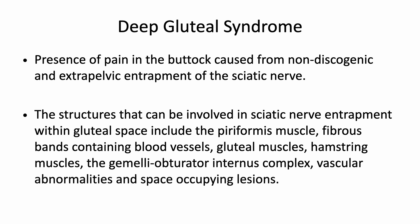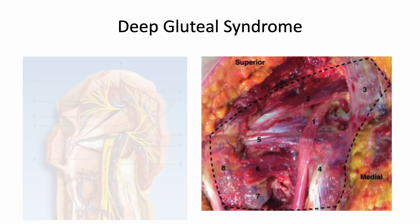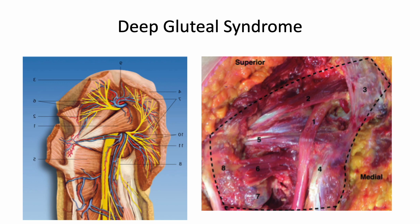Progress in understanding posterior hip anatomy and sciatic nerve kinematics has helped identify several locations where the sciatic nerve can be trapped. For that reason, the term deep gluteal syndrome — instead of piriformis syndrome — is now preferred to describe pain in the buttock caused by non-discogenic and extrapelvic entrapment of the sciatic nerve. Structures involved include the piriformis muscle, fibrous bands containing vessels, gluteal muscles, hamstring muscles, the gemelli-obturator internus complex, vascular abnormalities, and space-occupying lesions.